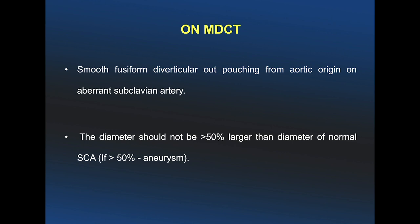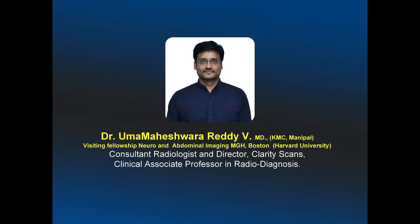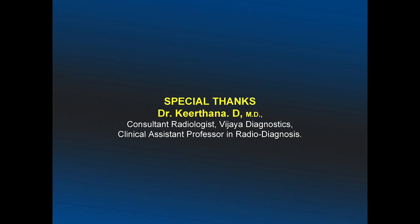The most important diagnostic clinching point is: if you see a diverticular outpouching from the aorta at the origin of an aberrant subclavian artery, you should think about Kommerell's diverticulum. If it is symptomatic, large, or associated with an aneurysm, you should treat it. Asymptomatic ones should be left alone. Thank you very much.